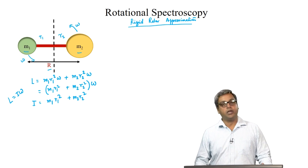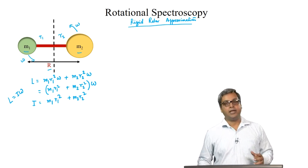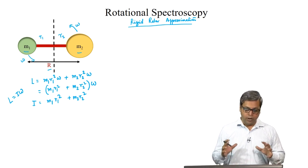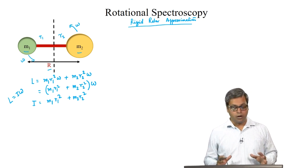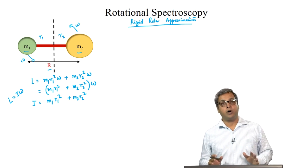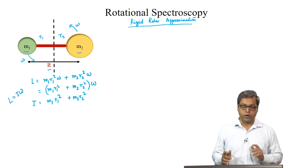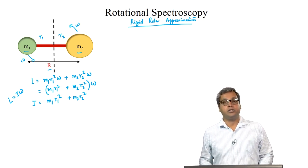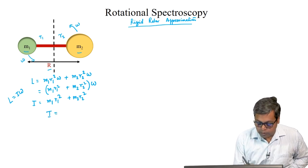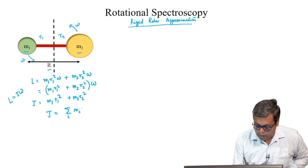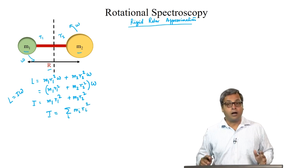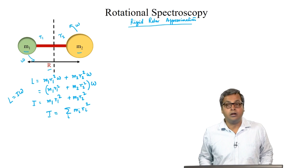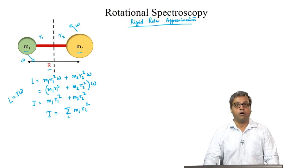Comparing this expression with L equals I·omega, we can see that I equals M1·R1² + M2·R2². When we were talking about a single rotating particle, we saw I equals mr². When we have a diatomic molecule with masses M1 and M2, then I equals M1·R1² + M2·R2². In general, the expression of I for a polyatomic molecule is I equals the summation of Mi·Ri², where Ri is the distance of the i-th particle of mass Mi from the center of mass of the system.